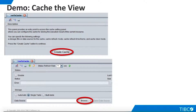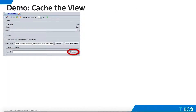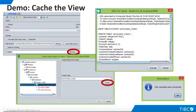We select Single Table Caching, and then click Browse in order to find our cache target database. We browse to our cache target data source and select it. Now that we have selected the cache target, we can define a specific cache table for this view. We click Browse, name our table, and click Create. TDV builds the DDL needed to create the table on the cache target, and our cache table is created.